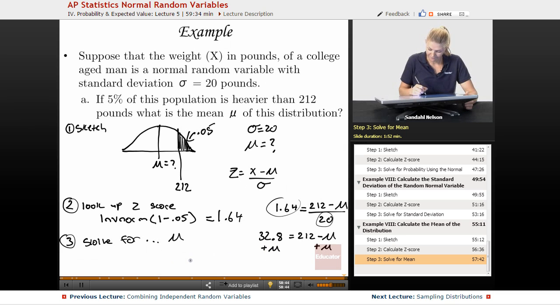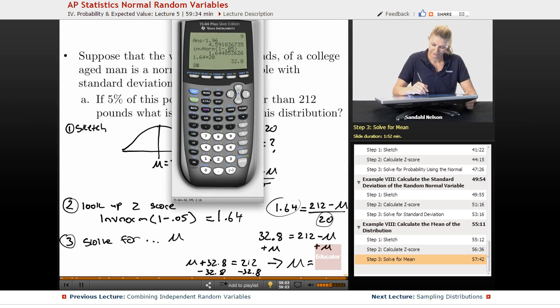So we have μ + 32.8 = 212, subtract that from both sides. So that means that the mean is just 212 minus 32.8, which equals 179.2.